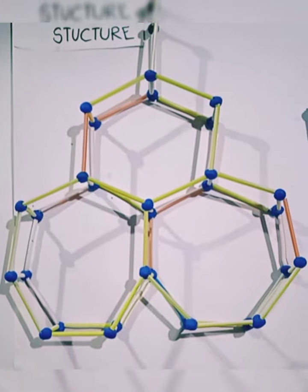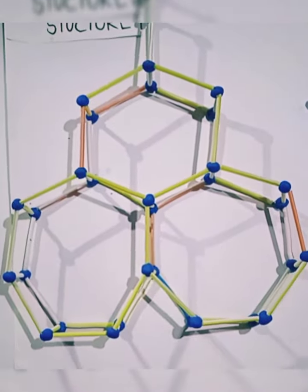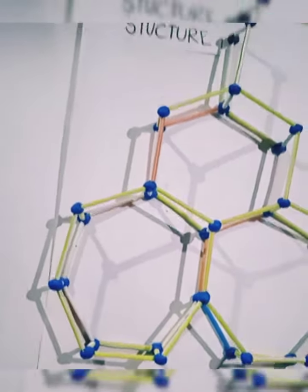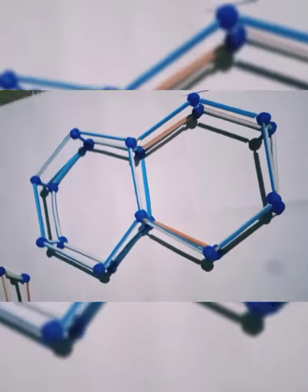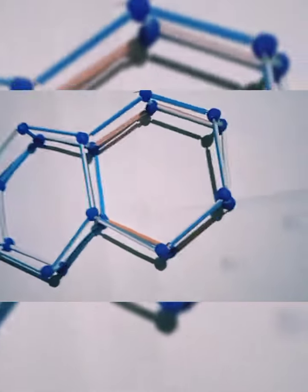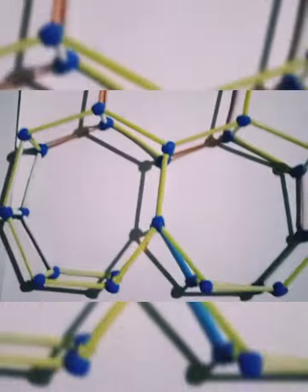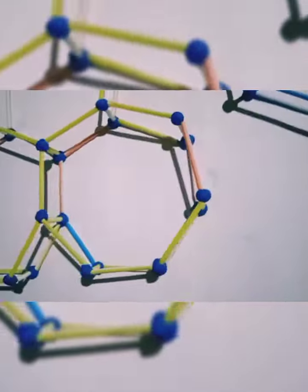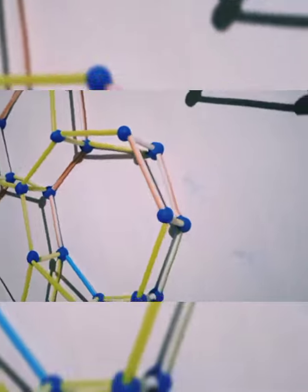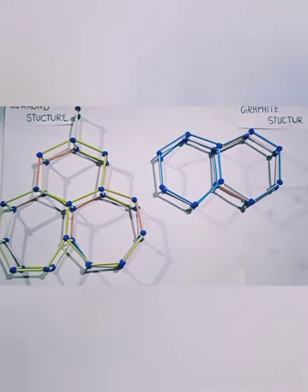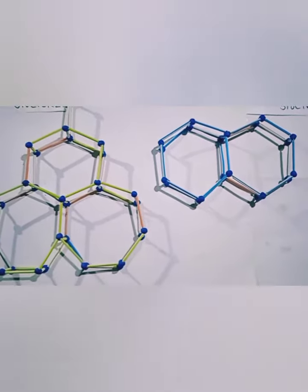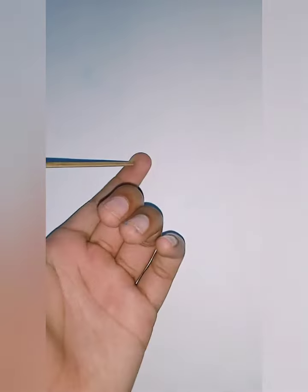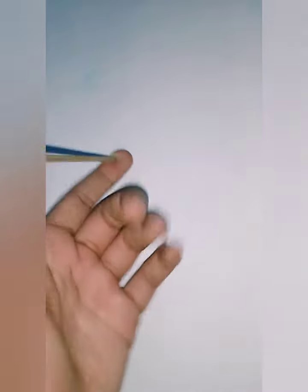So let's start. This is the diamond structure and this is the graphite structure — look at them. For this 3D model I have used some materials, let us see them. First, a stick.